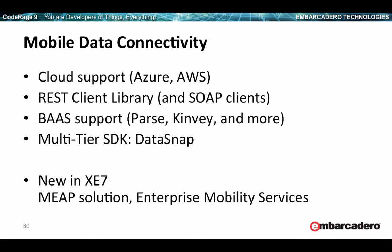On the mobile data side, there are lots of ways to connect with information — whether in the cloud with backend service providers like Azure or AWS, talking to REST servers with the REST client library for asynchronous REST calls (which also continues to support SOAP), or backend-as-a-service providers like Parse, Kinvey, and App42 with built-in components for user management, authentication, and file storage. You can also build your own middleware using an SDK like DataSnap. In XE7 we're introducing a new mobile enterprise application platform called Enterprise Mobility Services.